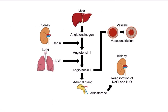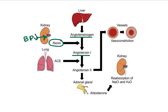Another picture here shows all the mechanisms together. When there is a reduction in blood pressure, arterial pressure in the kidney also reduces, causing renin secretion from the kidney. Renin acts on angiotensinogen — secreted from the liver and always present in the blood — converting it into angiotensin 1. Angiotensin 1 travels to the lungs where ACE, present in the endothelial cells, converts it into angiotensin 2.